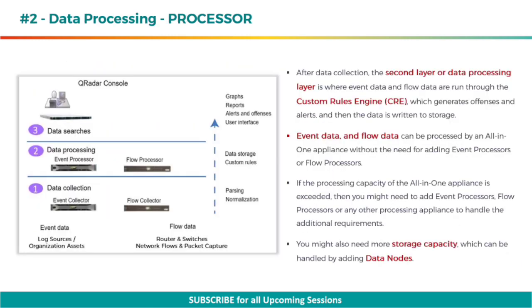Moving to the next component after data collection, the second layer or data processing layer is where event data and flow data are run through the custom rules engine, which generates offenses and alerts, and then the data is written to storage. Event data and flow data can be processed by an all-in-one appliance without the need for adding event processors or flow processors. If the processing capacity of the all-in-one appliance is exceeded, then you might need to add event processors, flow processors, or any other processing appliance to handle the additional requirements. You might also need more storage capacity, which can be handled by adding data nodes.